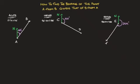Hi everyone. In this video we're going to learn how to find the bearing of a point A from a point B, given the bearing of point B from point A. To learn exactly how it's done, I'm going to be working through three examples illustrating what happens when the initial bearing is an acute angle (0–90°), an obtuse angle (90–180°), and a reflex angle (180–360°). So let's get started.